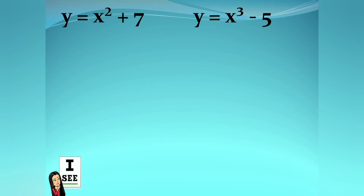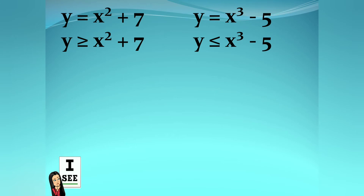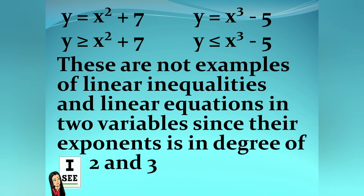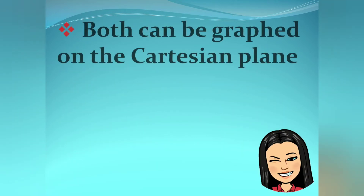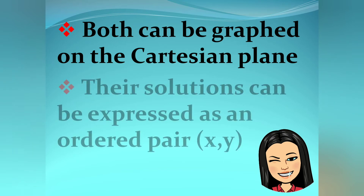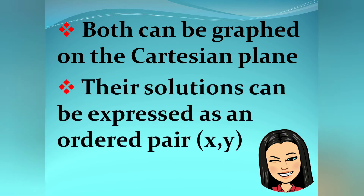Expressions like y equals x squared plus 7, y equals x cubed minus 5, y is greater than or equal to x squared plus 7, and y is less than or equal to x cubed minus 5 are not examples of linear inequalities or linear equations in two variables, since their exponent is of degree 2 or 3. Another similarity is that both can be graphed on the Cartesian plane, and their solutions can be expressed as an ordered pair (x, y).